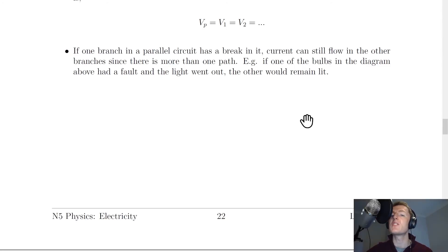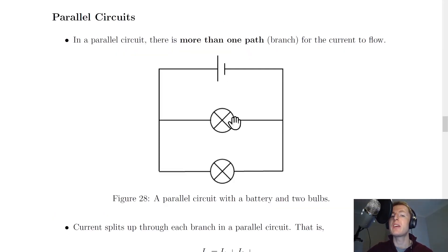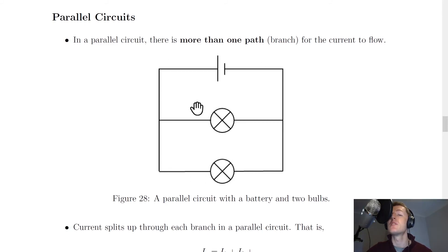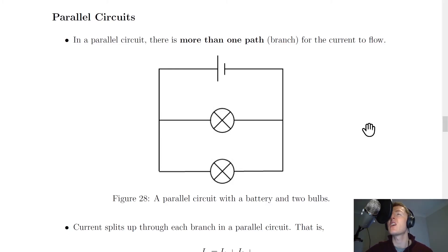One big advantage of parallel circuits is that if one branch has a break in it — such as a faulty component — current can still flow in the other branches since there is more than one path. For example, if one of the bulbs had a fault and the light went out, the other would remain lit. This is the way lights in your home are connected, as well as car headlights and traffic lights. It would be very annoying if one bulb in your bedroom went out and caused all the other light bulbs to go out as well — this is why we connect lights in the home in parallel.